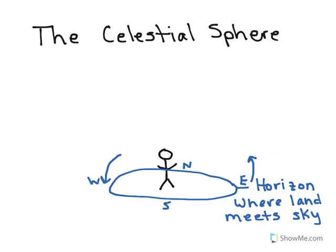Your location on Earth will also affect this. If you travel farther south, new stars will appear on your southern horizon. Or if you travel farther north, objects on the northern horizon will get higher.